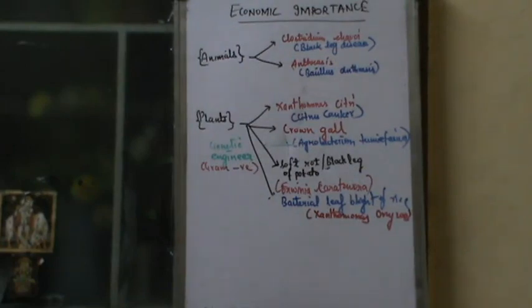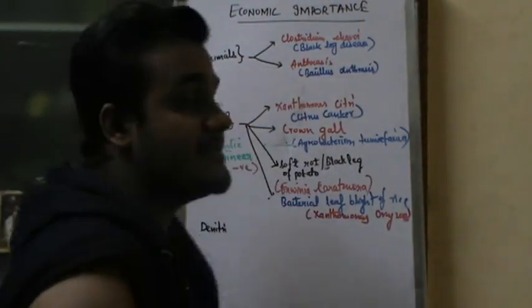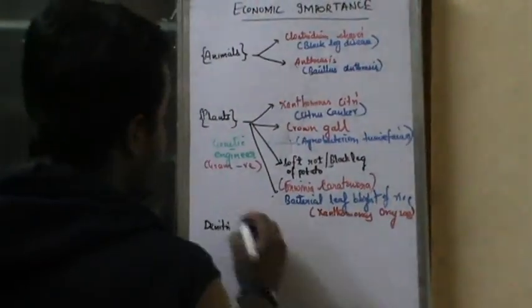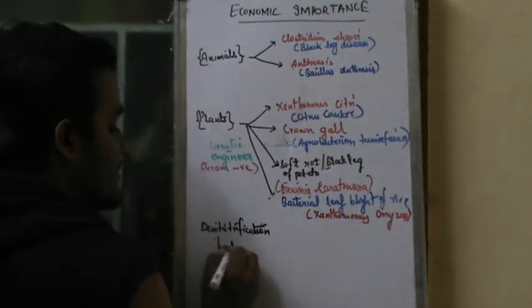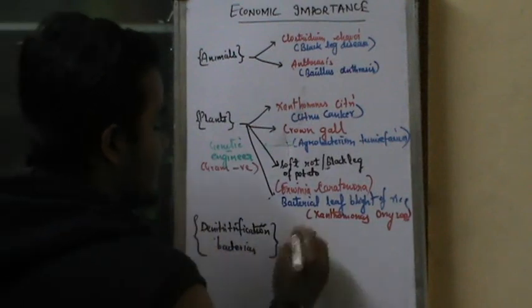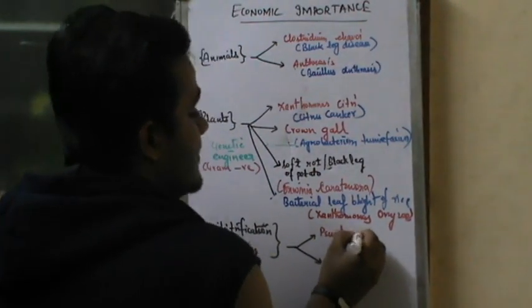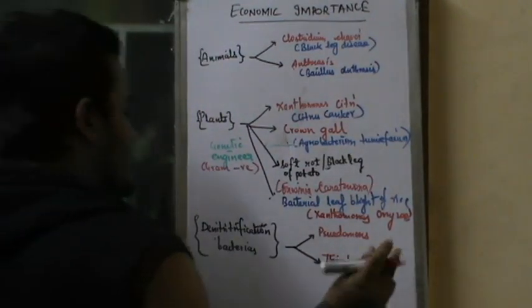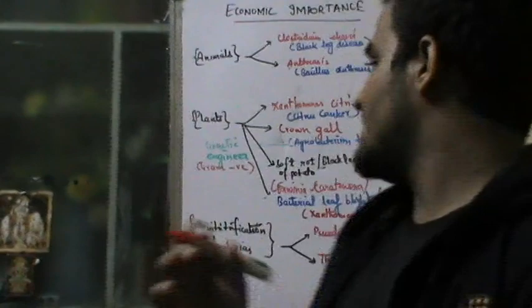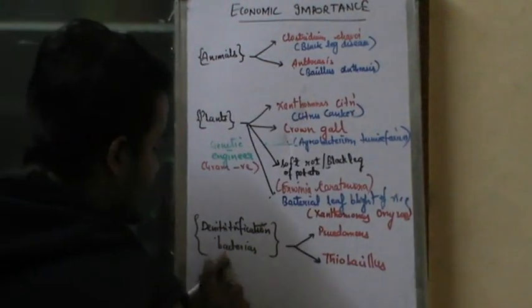Then you have to remember other things — denitrifying bacteria. This is an NCERT liner from Class 11 Plant Physiology, Mineral Nutrition chapter. The denitrification bacteria — examples are Pseudomonas denitrificans and Thiobacillus. These are very, very important and are given in NCERT liner from the Mineral Nutrition chapter.